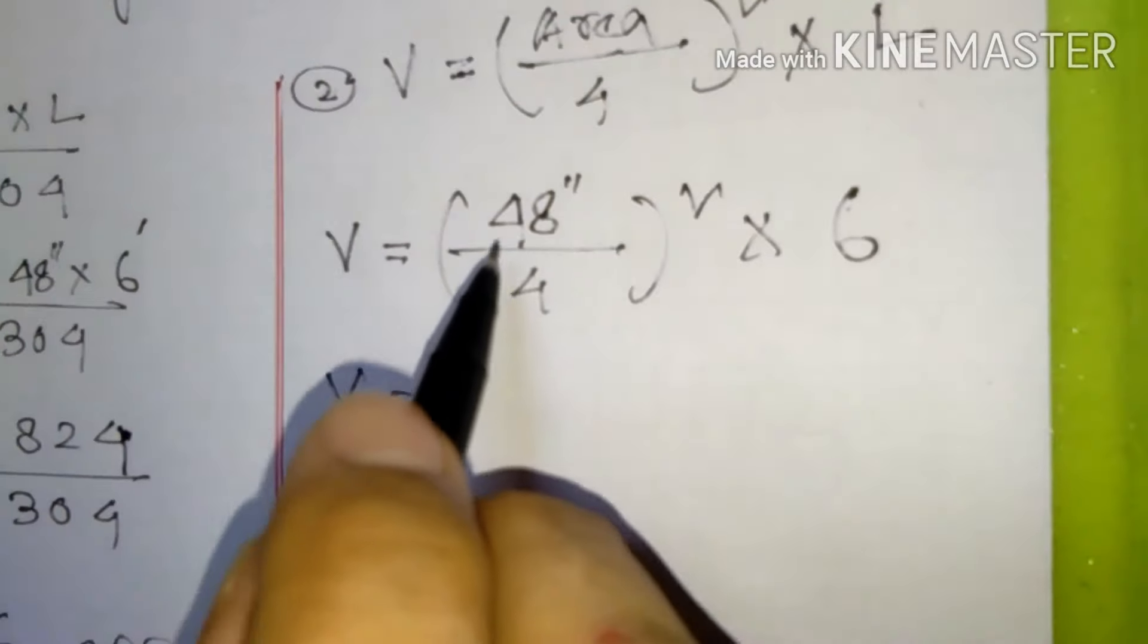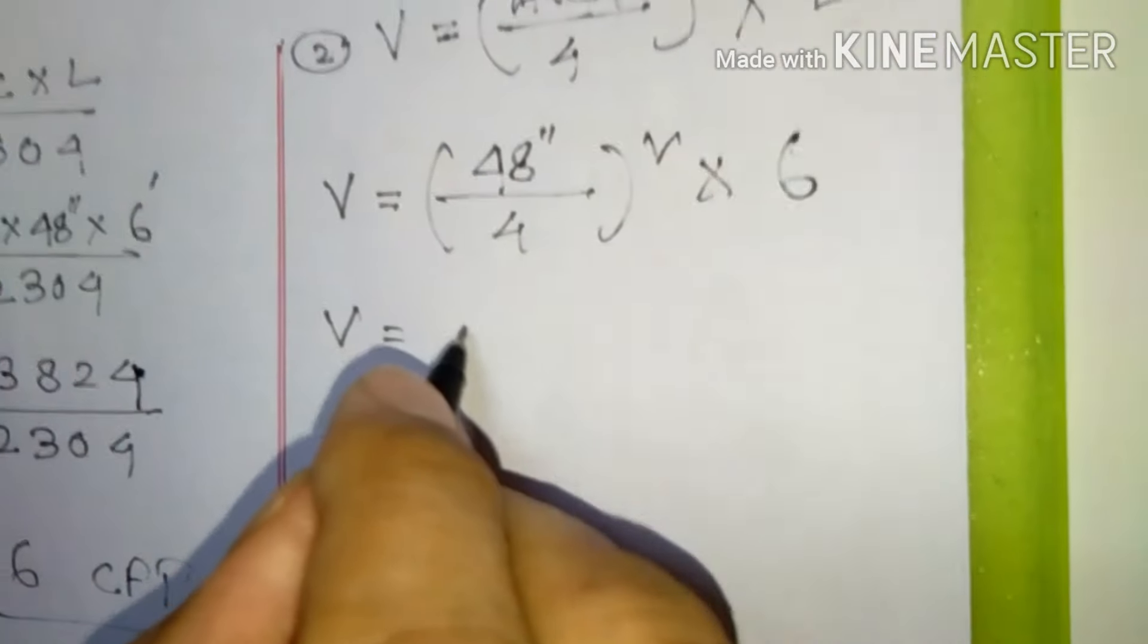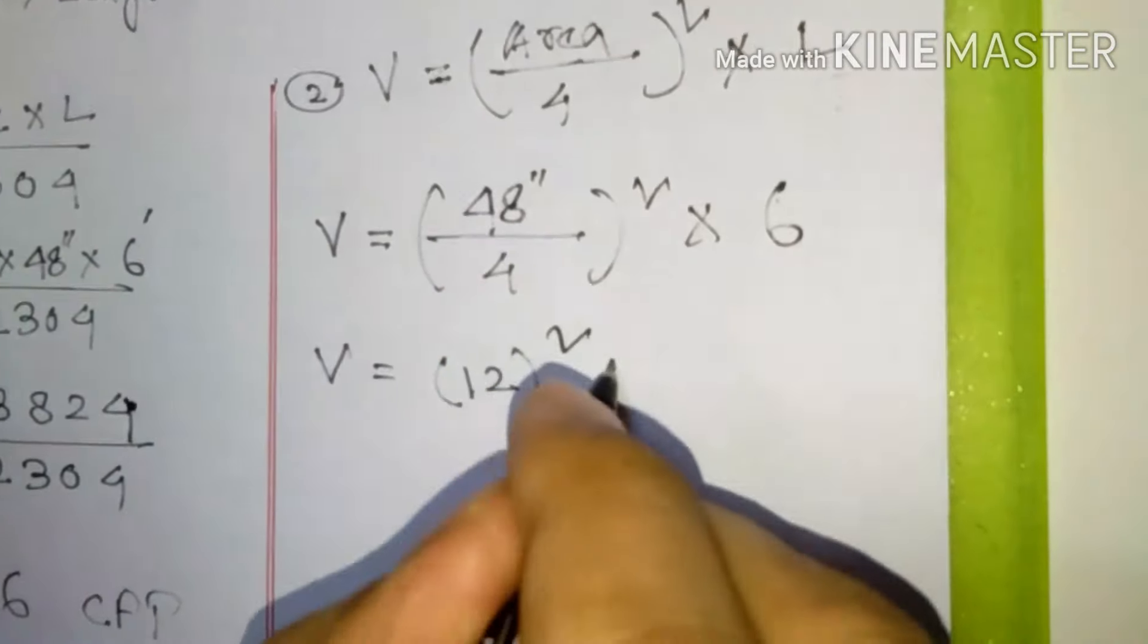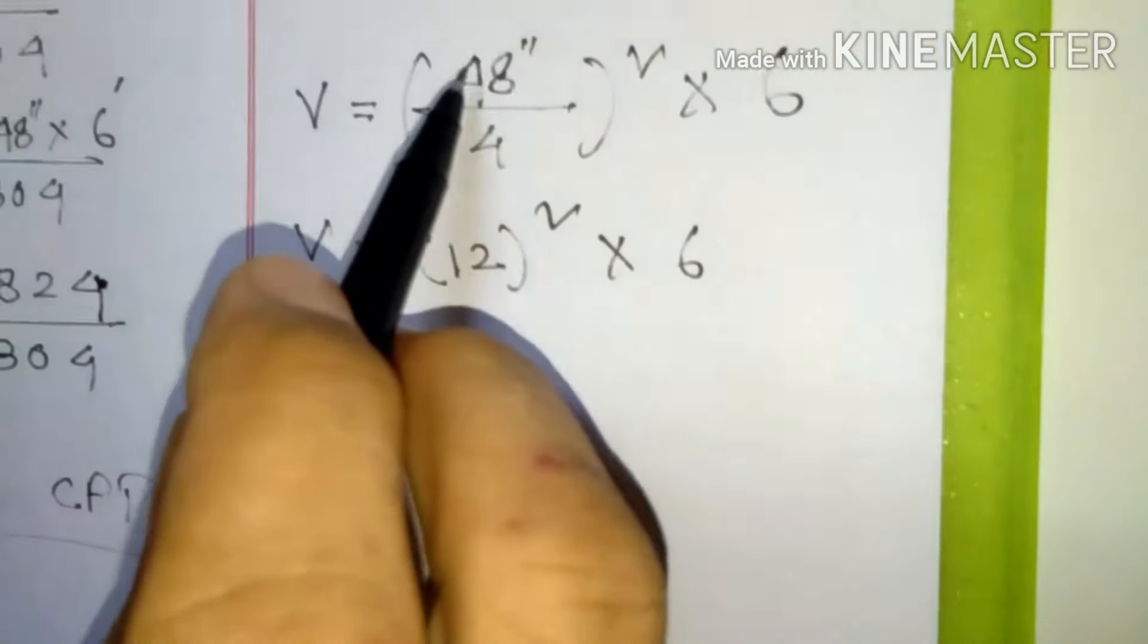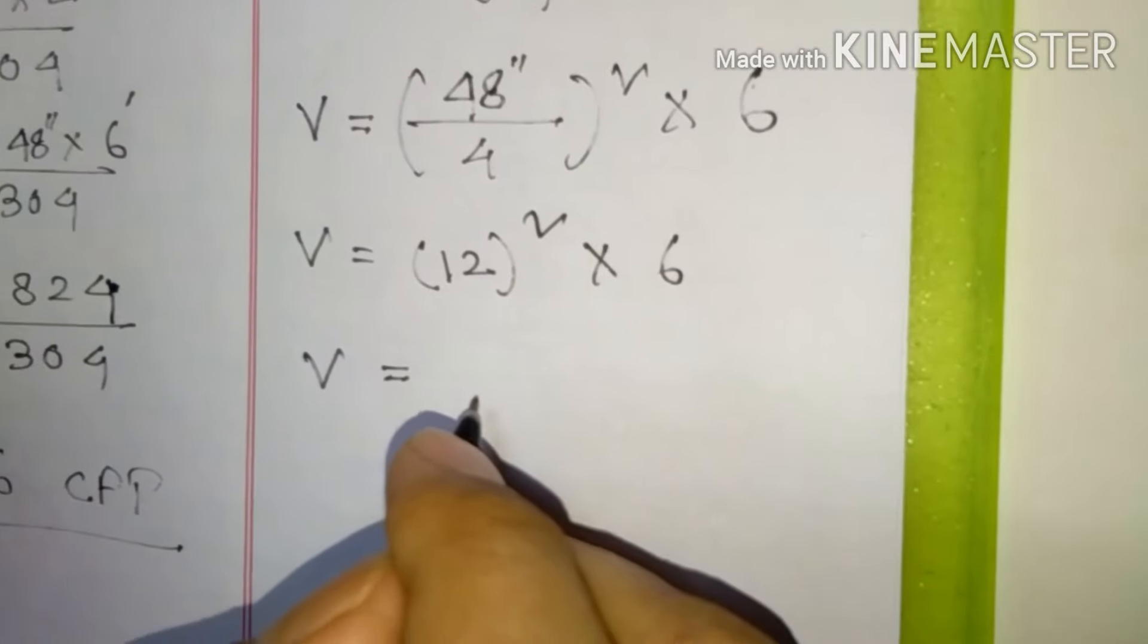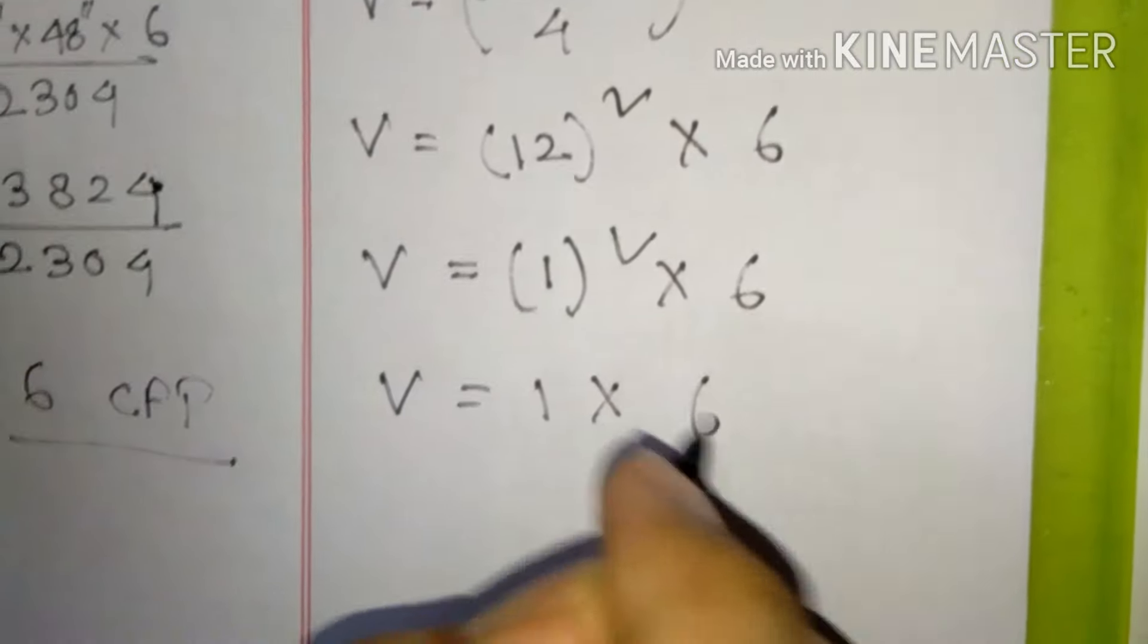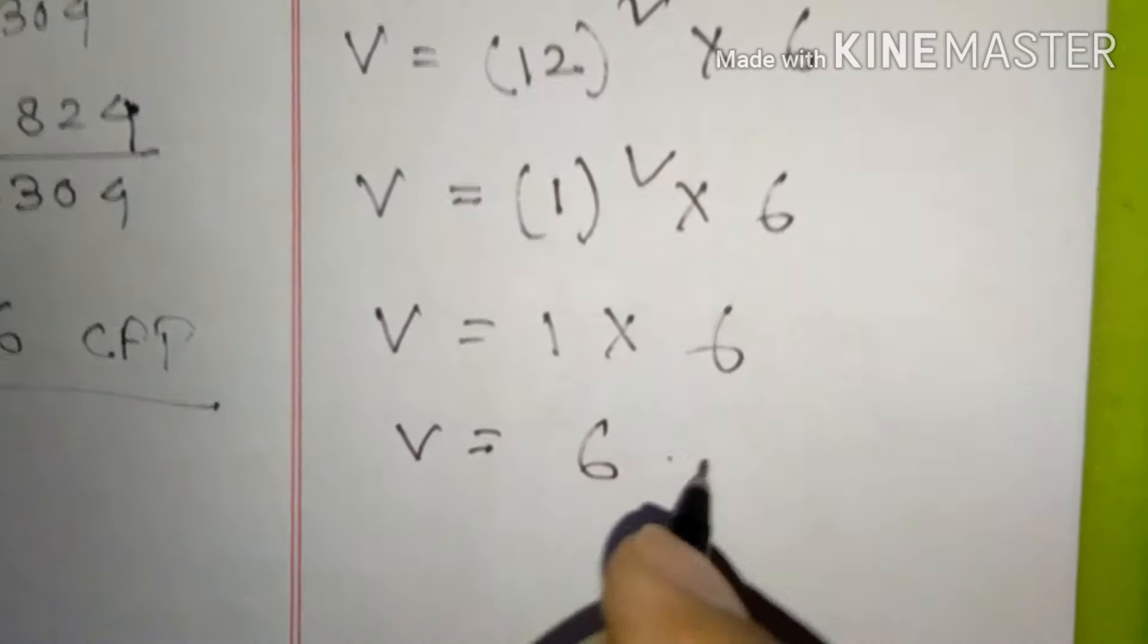Now 48 if you divide by 4, we will get 12. Now 12 is what? 12 is in inches because from 48 inches we are getting. 48 inches divided by 4 is 12 inches. 12 inches means 1 feet. Why 1 feet? In 1 feet there is 12 inches. Now 1 into 6 means that volume is 1 times 6 is 6 CFT.